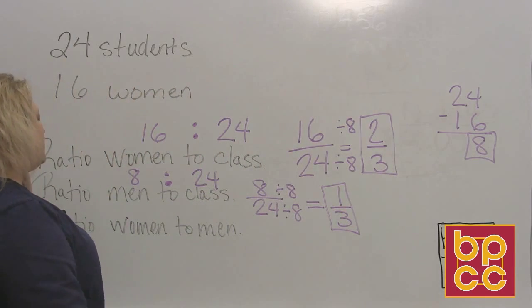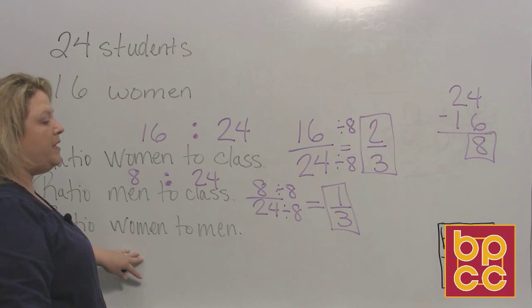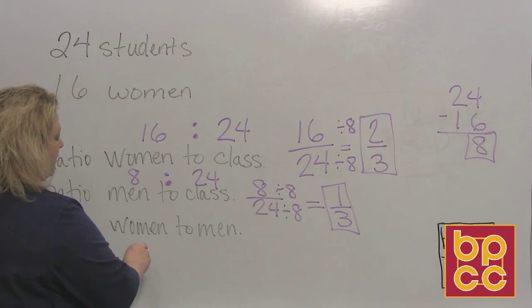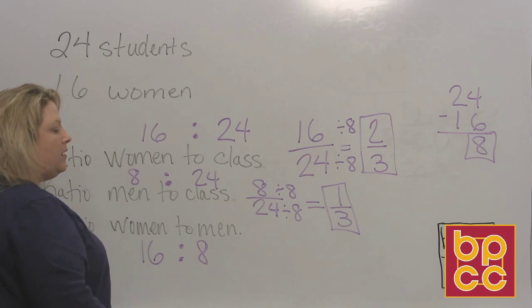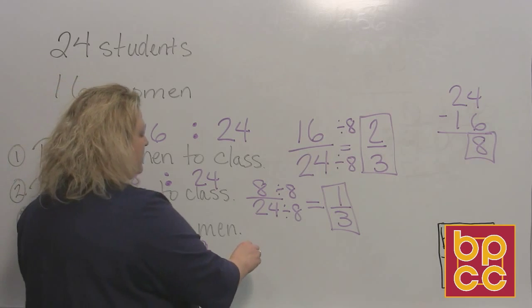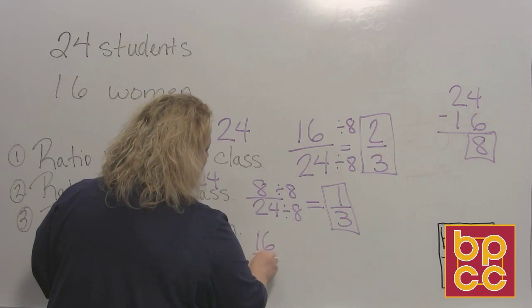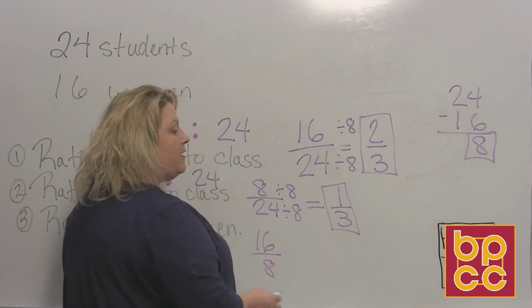And then we have one last one, and the last one says the ratio of women to men. Okay, well we know that there are 16 women. We know that there are 8 men. So that's our fraction, 16's first, 8 goes second, and it's okay that it's improper.